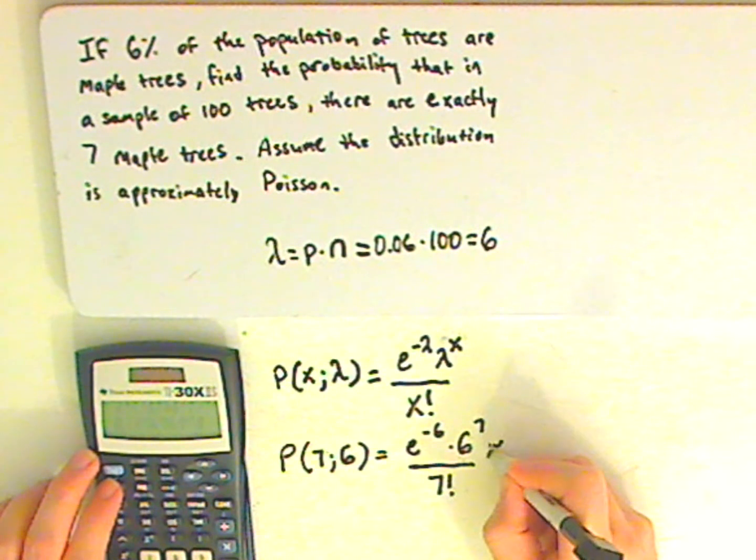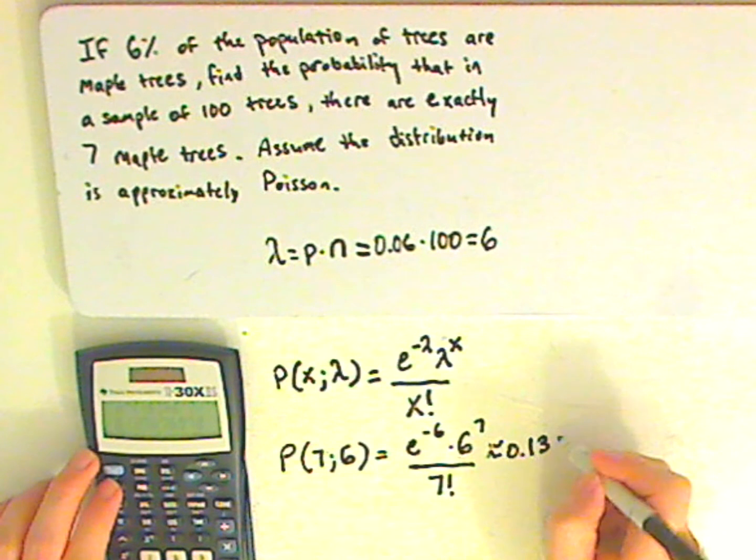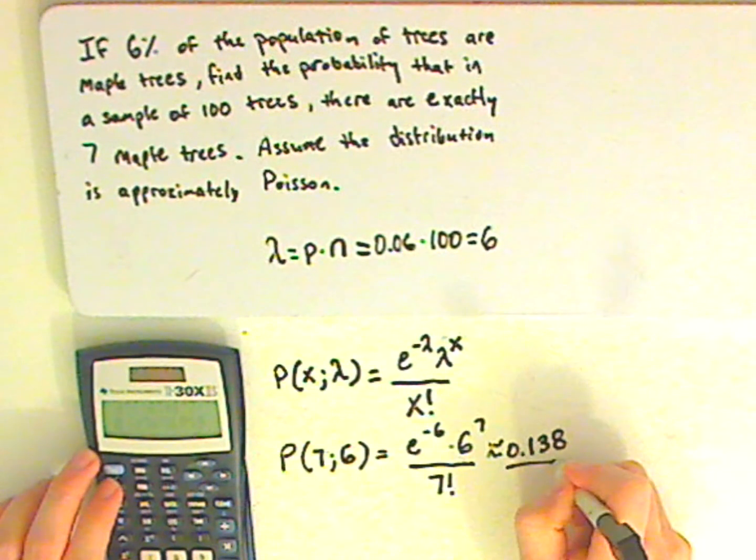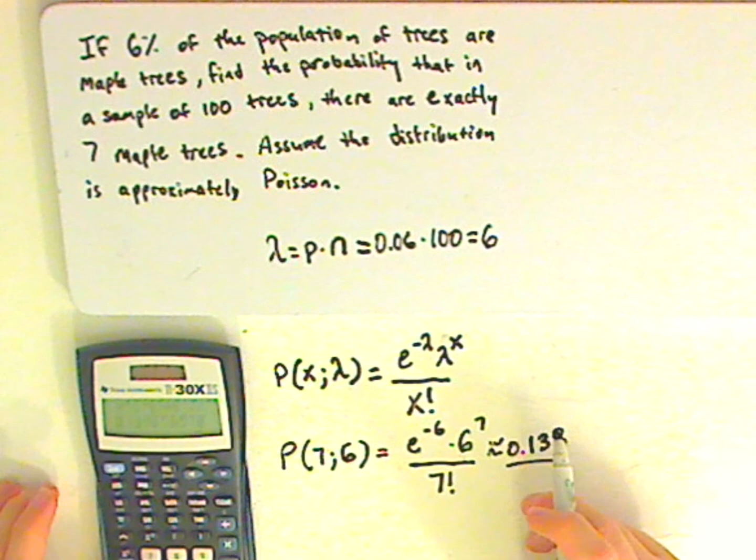And you get approximately 0.138. And typically for probability, you round to three decimal places.